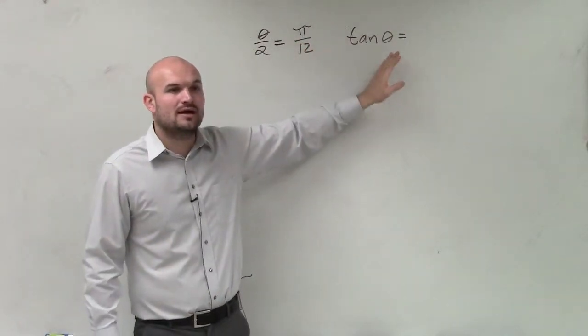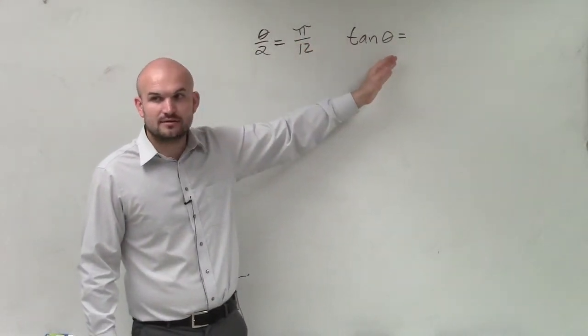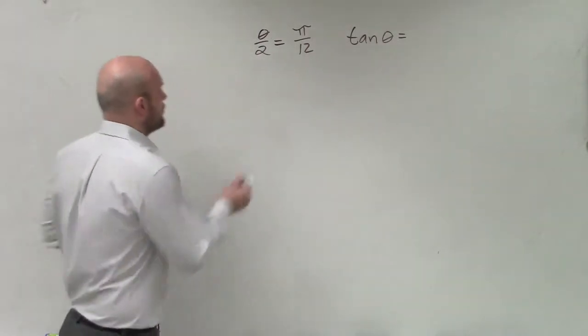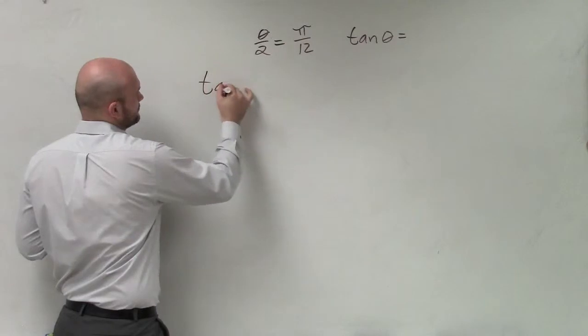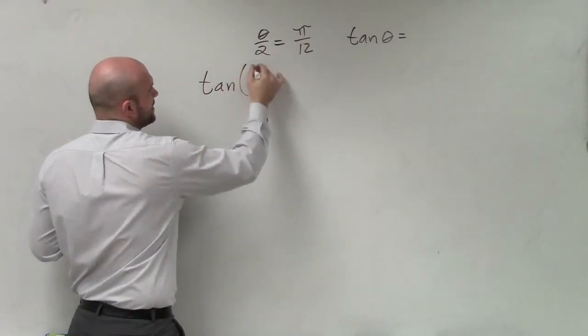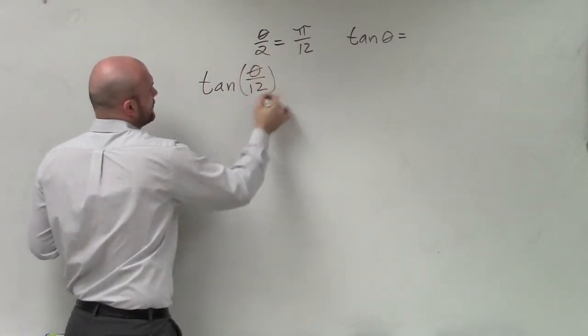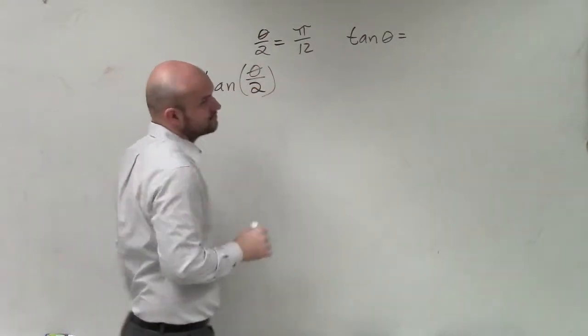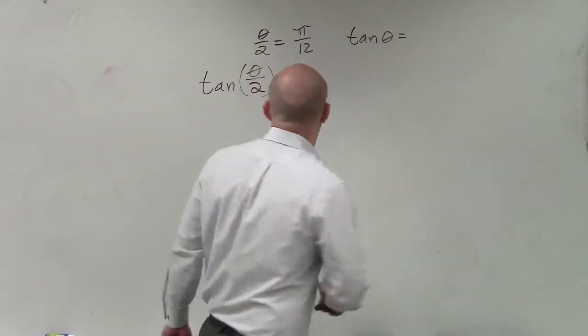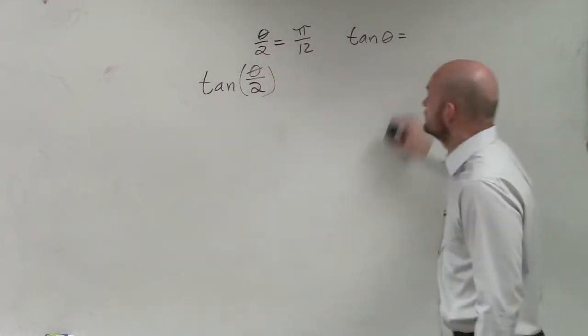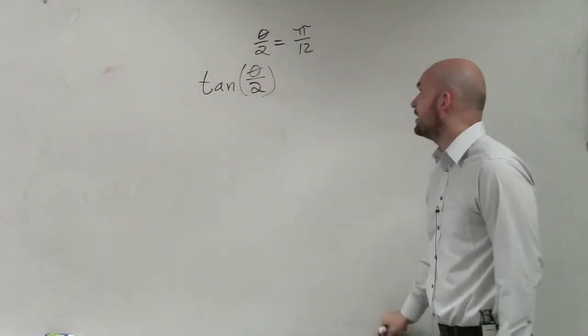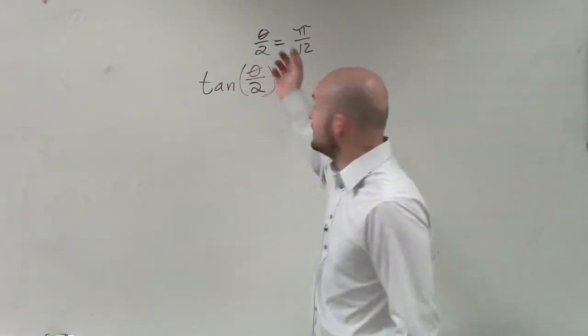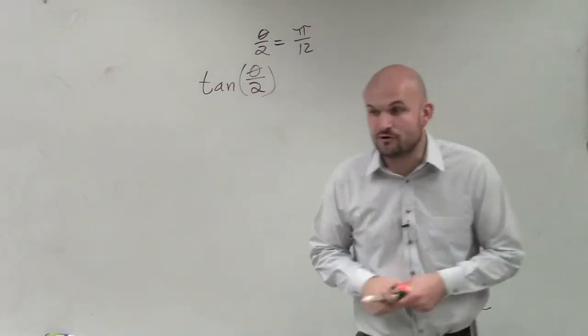The half angle formulas - if I want to evaluate for the tangent of θ over 2, where θ over 2 is equal to π/12, I need to go and use the tangent formula.